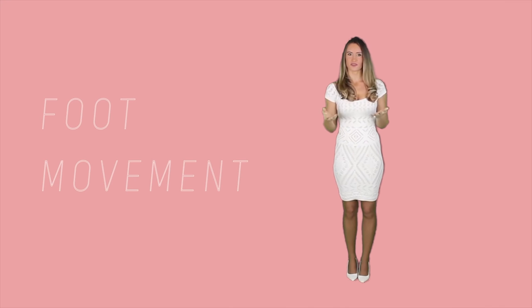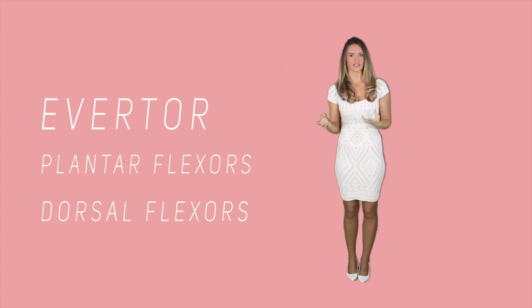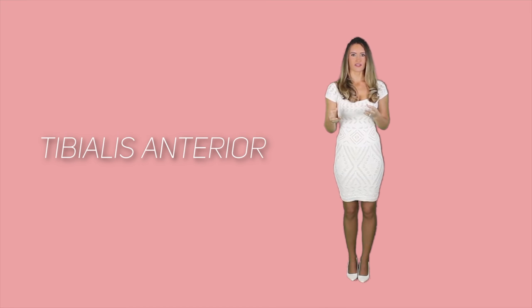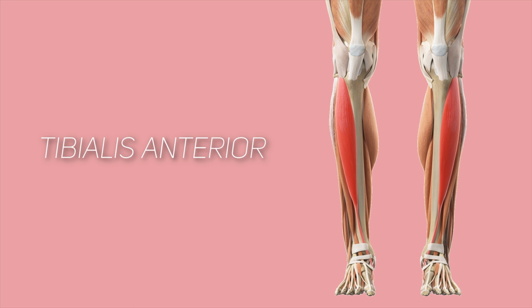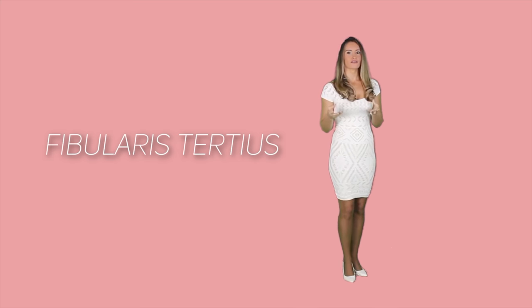Foot movement uses numerous muscles, mainly the plantar flexors and the dorsal flexors. Dorsal flexors contain the tibialis anterior, which is a long, spindle-shaped muscle anatomically situated anteriorly to the leg. It originates on the tibia surface and medially passes superficial to the distal tibia. Its contraction stimulates dorsiflexion and the foot undergoes inversion. A second dorsal flexor is the fibularis tertius, of average size, linking the lateral side of the foot to the fibula, with functions similar to the tibialis anterior.